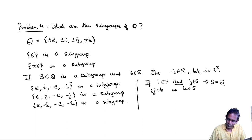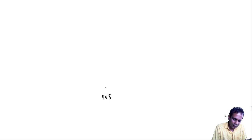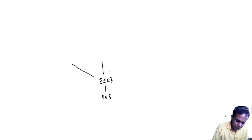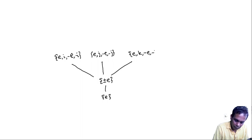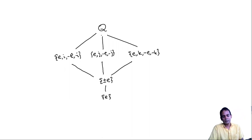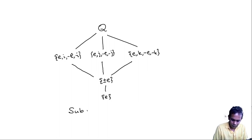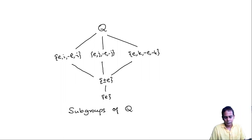Similarly, if a subgroup contains i and k, or j and k, or i and -j, or any such combination of two distinct non-identity generators, it will be all of Q. These are all the subgroups of Q. We can display them in a lattice: at the bottom is {e}, above that is {±e} of order 2, then three subgroups of order 4 — {e, i, -e, -i}, {e, j, -e, -j}, {e, k, -e, -k} — and at the top is Q itself. Q has 6 subgroups in total, including the trivial group and Q itself.